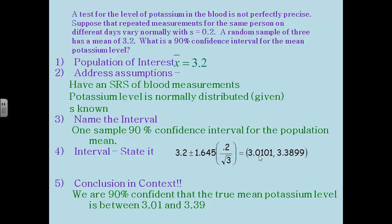So we're going to address our population of interest is x bar. Our sample of 3 is 3.2. The mean is 3.2. We are told that it's an SRS of blood measurements. We are told that the potassium level is normally distributed. Therefore we don't have to worry about the fact that this is such a small sample. And we are told that the standard deviation is 0.2. Name the interval. This time we're doing a one sample 90 percent confidence interval for the population mean.